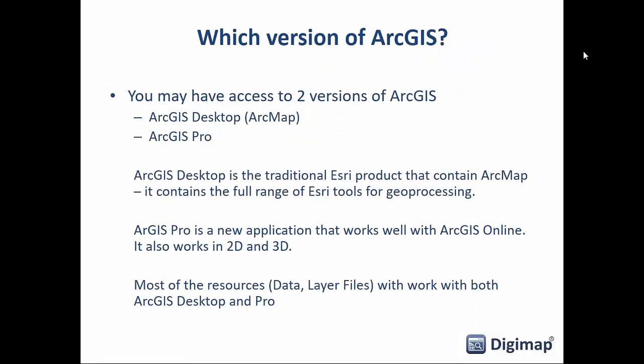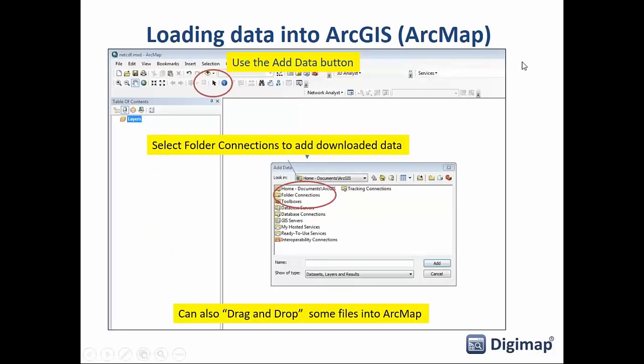Now let's look at actually using that data within ArcGIS itself. Two versions are really available: ArcGIS Desktop, commonly called ArcMap, and ArcGIS Pro, which is the newer version. ArcGIS Pro will eventually replace ArcGIS Desktop but probably not for quite a long time. ArcGIS Pro allows you to do a lot more with 3D — so if you want to view building height datasets in 3D, you'd want to use ArcGIS Pro or ArcGIS Online. Given that 86% of you use ArcGIS Desktop and ArcMap, some of this may be going over things you already know.